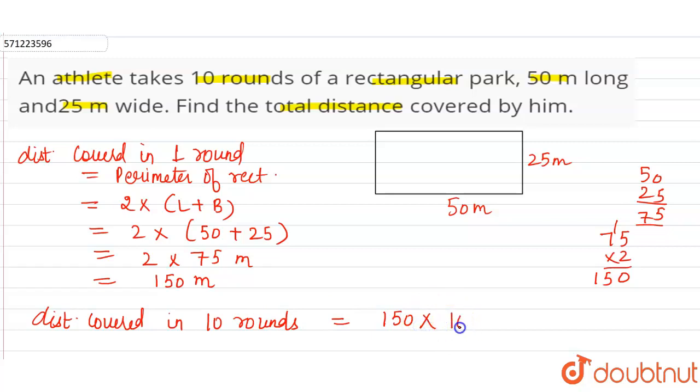So 150 times 10 is 1500 meters. So the total distance covered by the athlete in 10 rounds will be equal to 1500 meters.